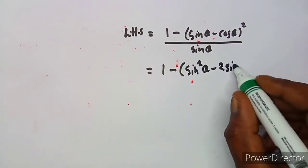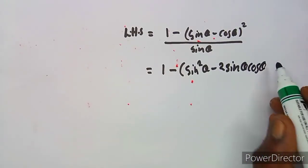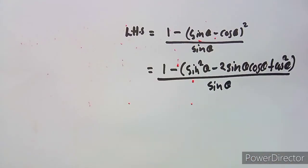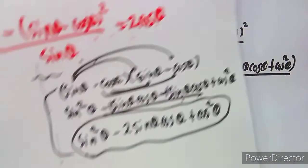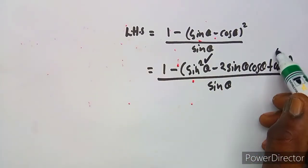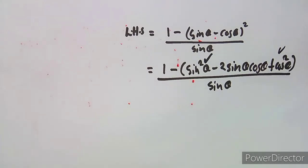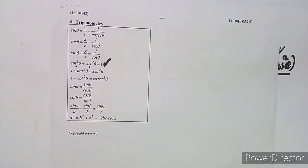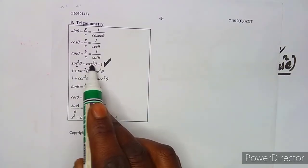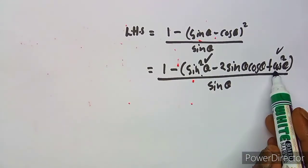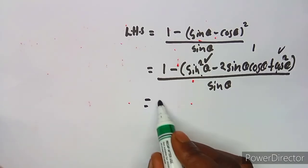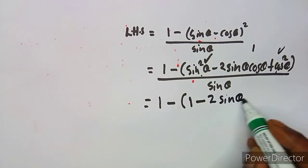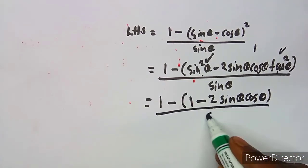So we have sine squared theta minus two sine theta cos theta plus cos squared theta, all over sine theta. We notice that sine squared theta plus cos squared theta equals 1 from our identities, so we substitute 1 in its place. This gives us 1 minus two sine theta cos theta, all over sine theta.